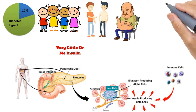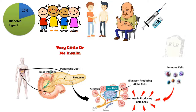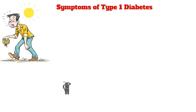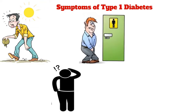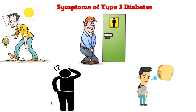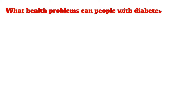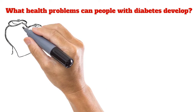People with type 1 diabetes need daily injections of insulin to control their blood glucose levels. If they don't have access to insulin, they will die. Symptoms of type 1 diabetes include abnormal thirst and dry mouth, sudden weight loss, frequent urination, constant hunger, and blurred vision.